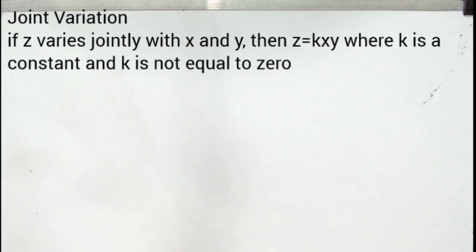Joint variation: if Z varies jointly with X and Y, then Z equals KXY, where K is a constant and K is not equal to zero.